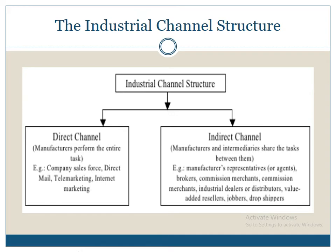So the industrial channel structure can be direct or indirect. Direct channel consists of manufacturer performing the entire task, company sales force, direct email, tele shopping, telemarketing, and internet marketing. Indirect channel is where manufacturers and intermediaries share the task between them. Examples include manufacturer's representatives or agents, brokers, commission merchants, industrial dealers, distributors, value added resellers, jobbers, drop shippers, etc.